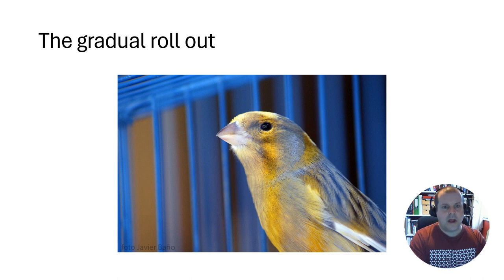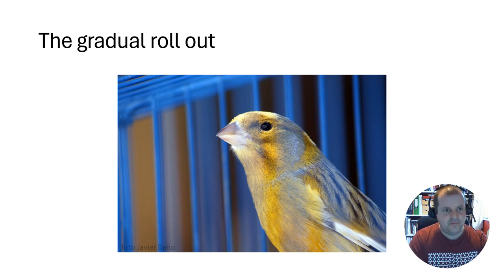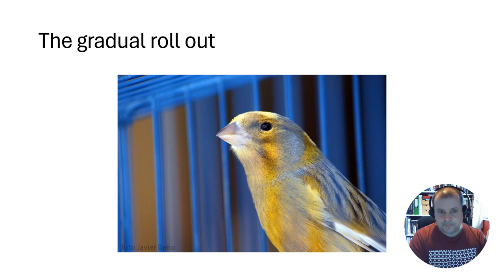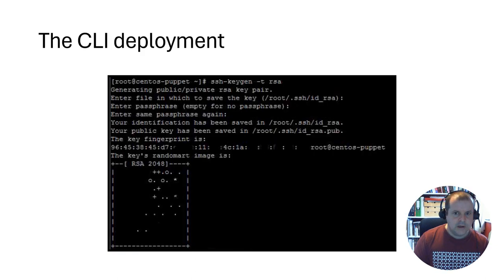Another issue — particularly seen with cloud providers and network hardware — is what happens when the rollout causes a cascading failure. You deploy to a particular piece of hardware, try to roll back when something goes wrong, but that hardware has already propagated the update to 10 other pieces of hardware. You might not be able to catch up and revert all those changes, potentially having to switch everything off and update manually.